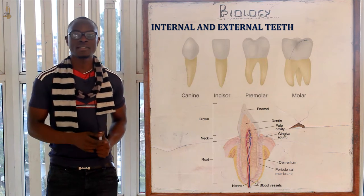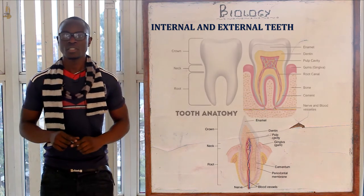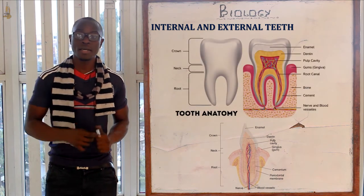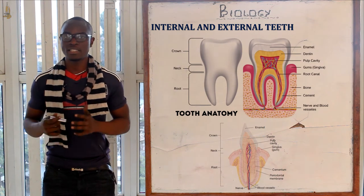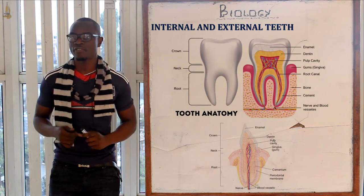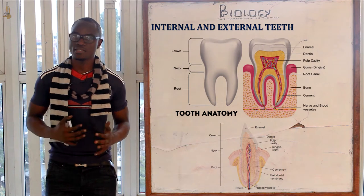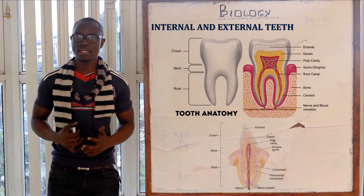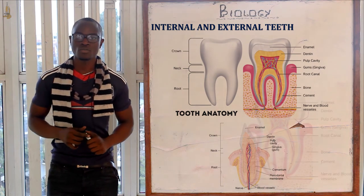Now let's look at the internal structure of the teeth. The bulk of the tooth is made up of the enamel; we also have the dentine, the pulp cavity, the cement, and finally the periodontal membrane.